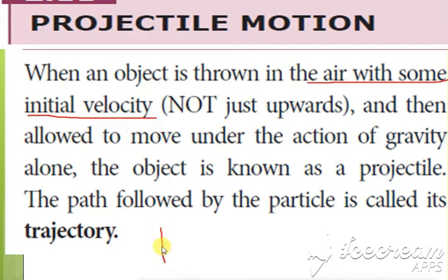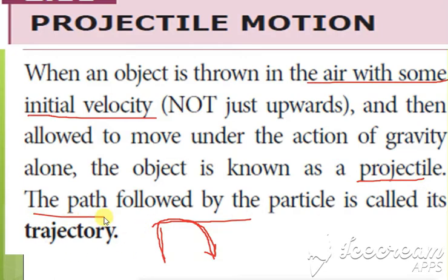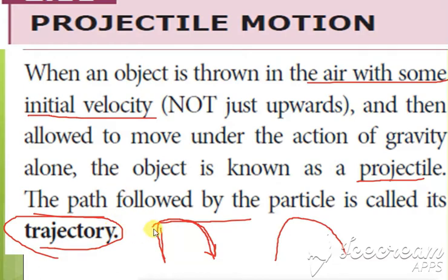Suppose from a certain height you are throwing the object. When you throw it, the object does not move in a straight line — because of gravity it comes down to the ground. That path from where it is moving until it reaches the ground is known as a projectile, and the path followed by it is called a trajectory.